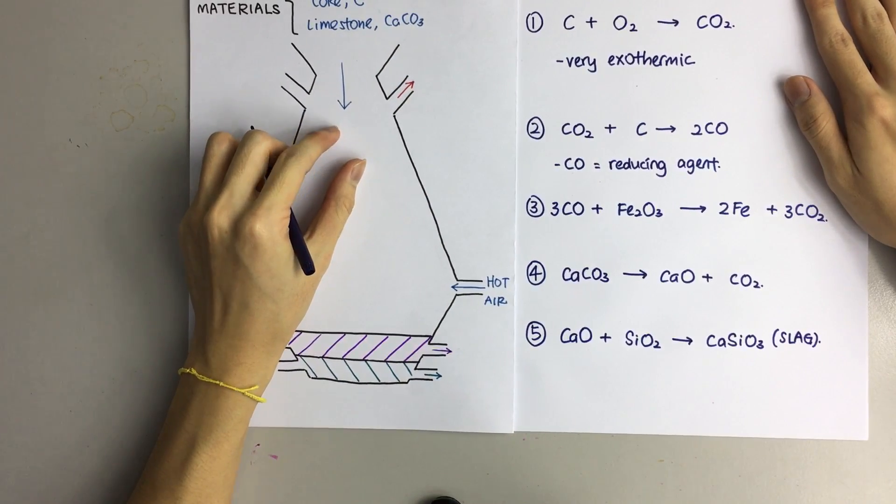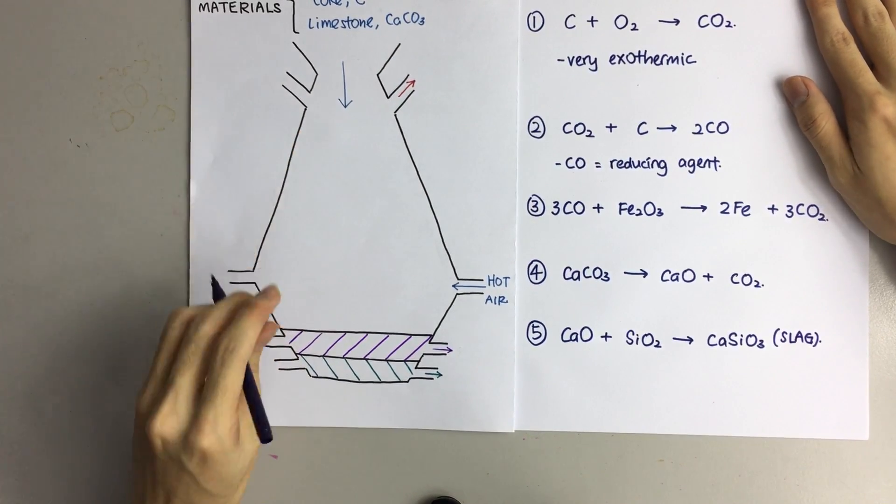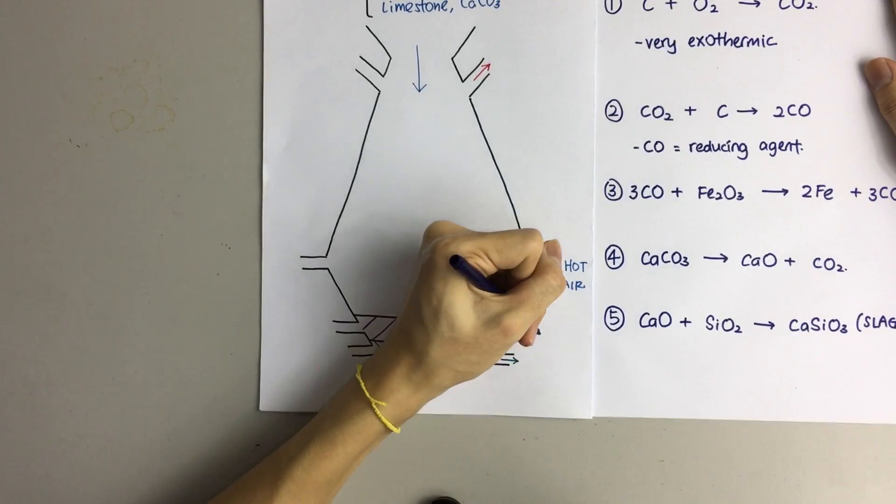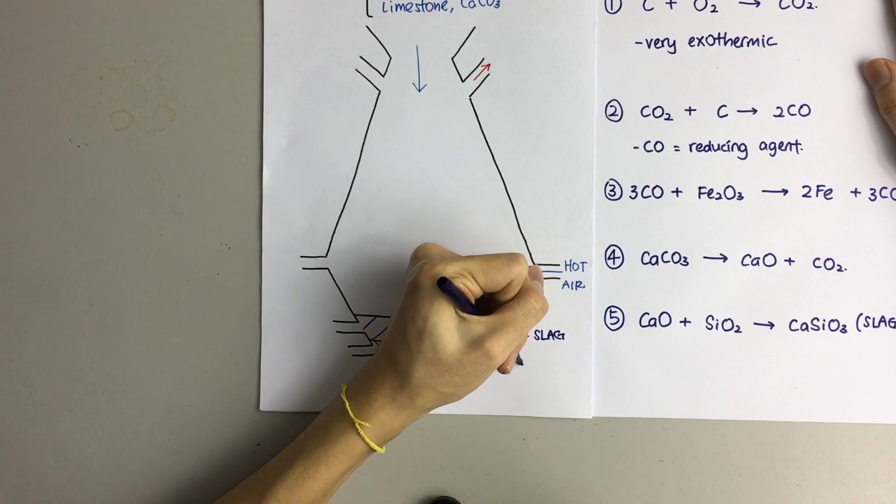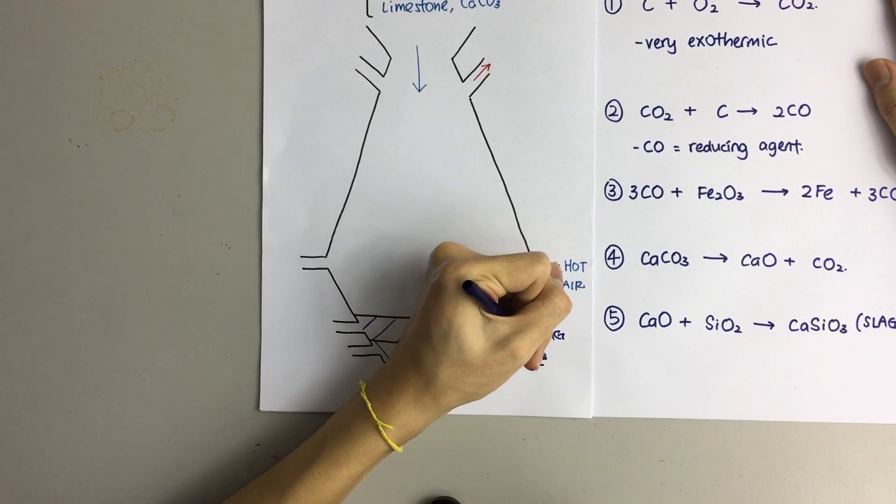Because slag is less dense than iron, it's going to float on top here. Therefore, the upper layer is slag, whereas the lower layer is going to be molten iron.